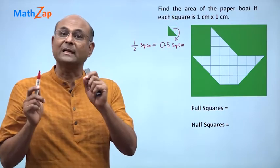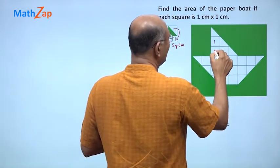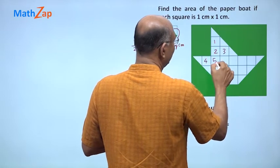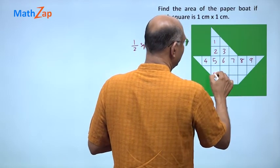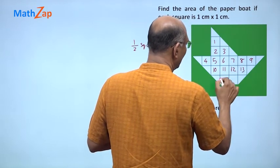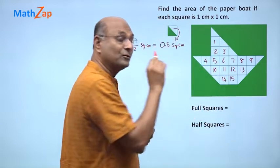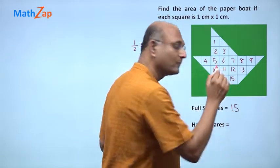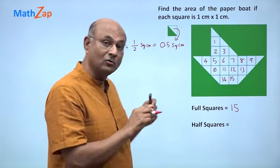Whenever you are given a shape like this, first let us count the full squares: 1, 2, 3, 4, 5, 6, 7, 8, 9, 10, 11, 12, 13, 14, 15. So I have 15 full squares.